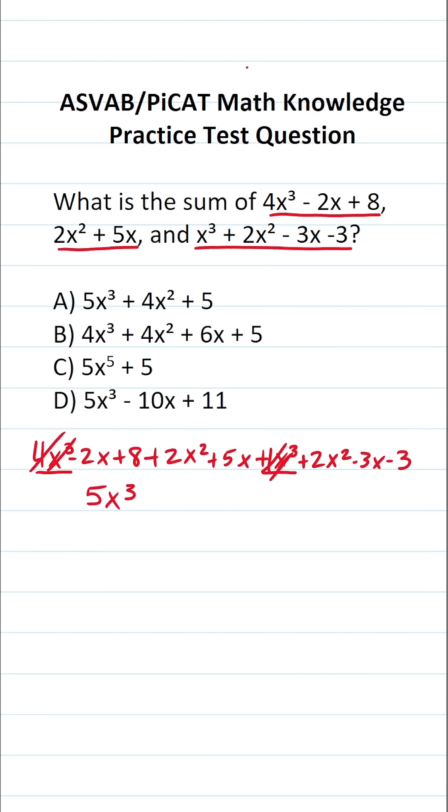Again, we're adding these terms based on their powers, and the next highest power is going to be squared. All right, so here's 2x². Its corresponding like term is right here. It's 2x². 2x² + 2x² is going to be 4x². Now that we've combined those like terms, let's cross them out.